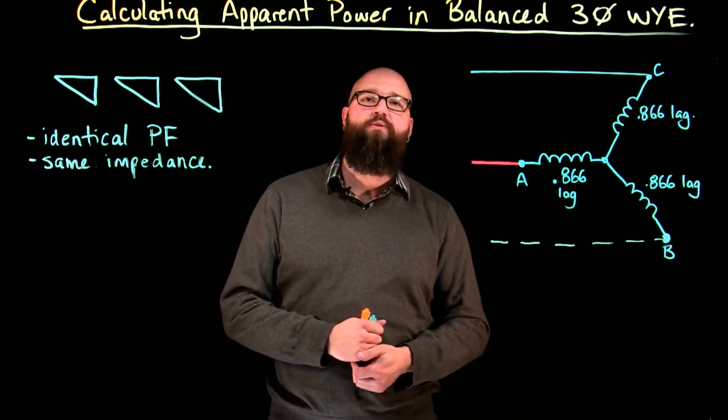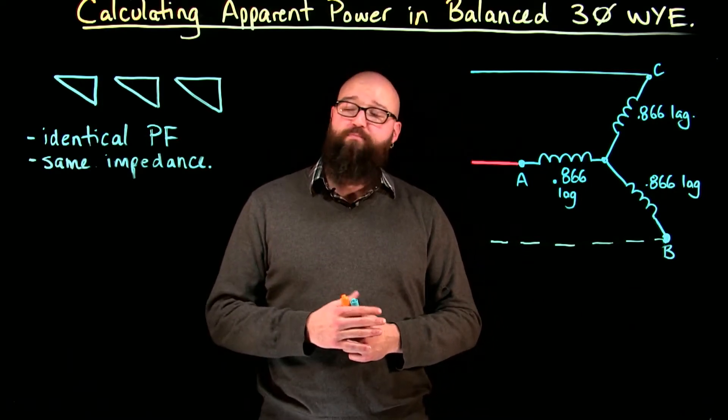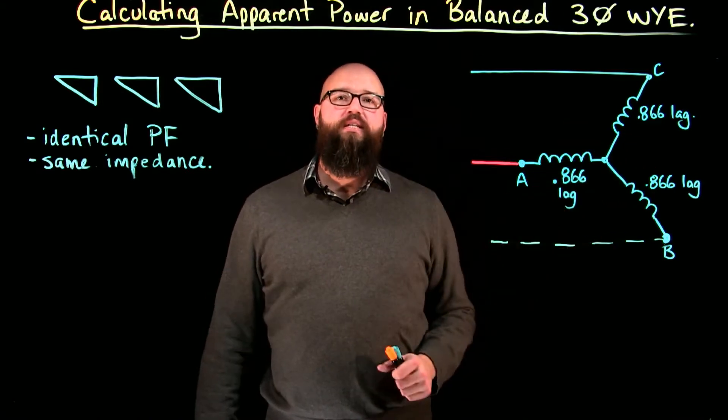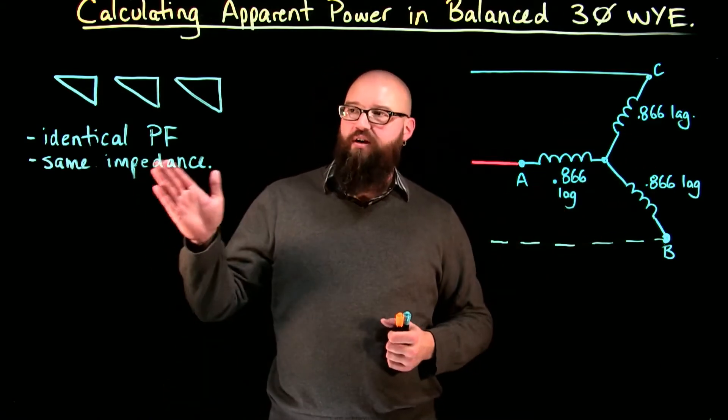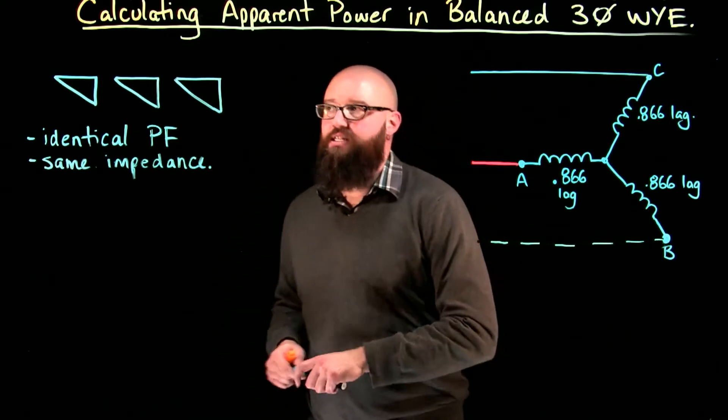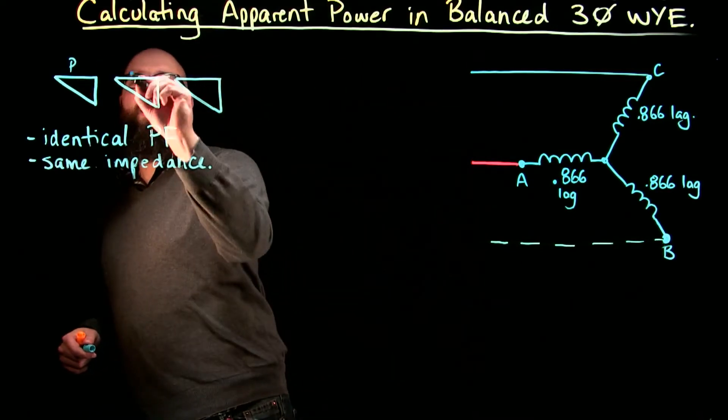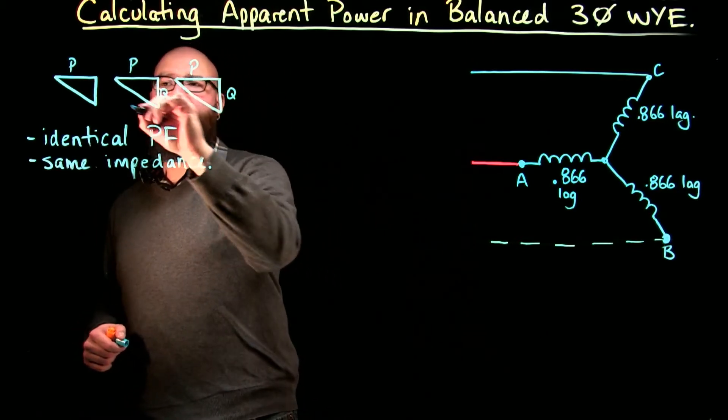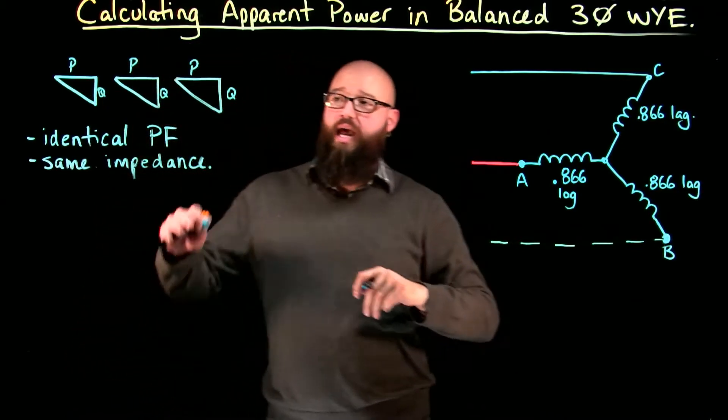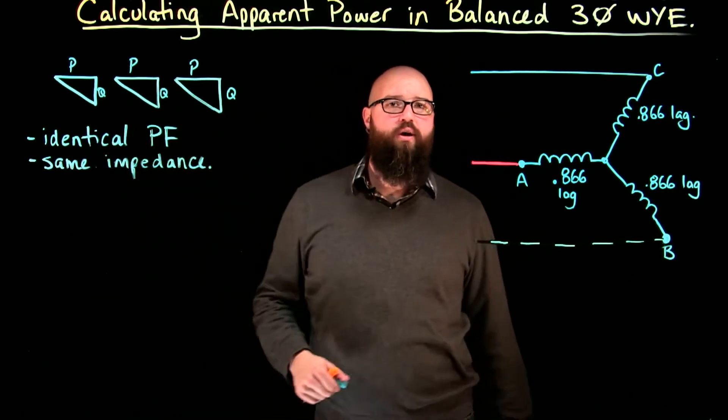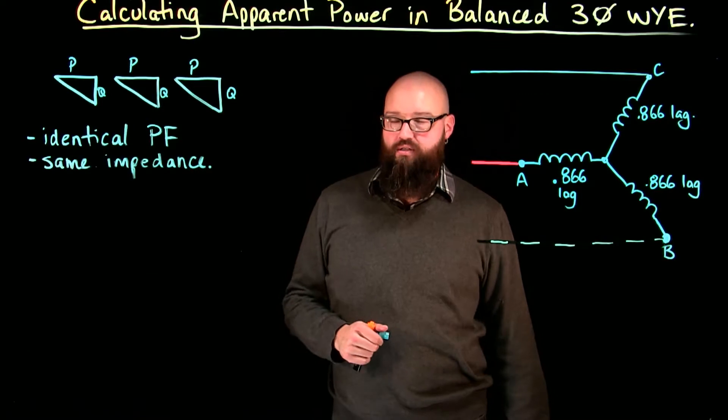Which means we're going to have a balanced load as well. When we look at the power triangles from each one of these individual phases, we're going to find that they make essentially the exact same power triangle. What that means is each one of these is going to have the same amount of power and the same amount of reactive power, and one key thing we're going to mention right now is the reactive power from each one of these coils is going to be lagging VARs.